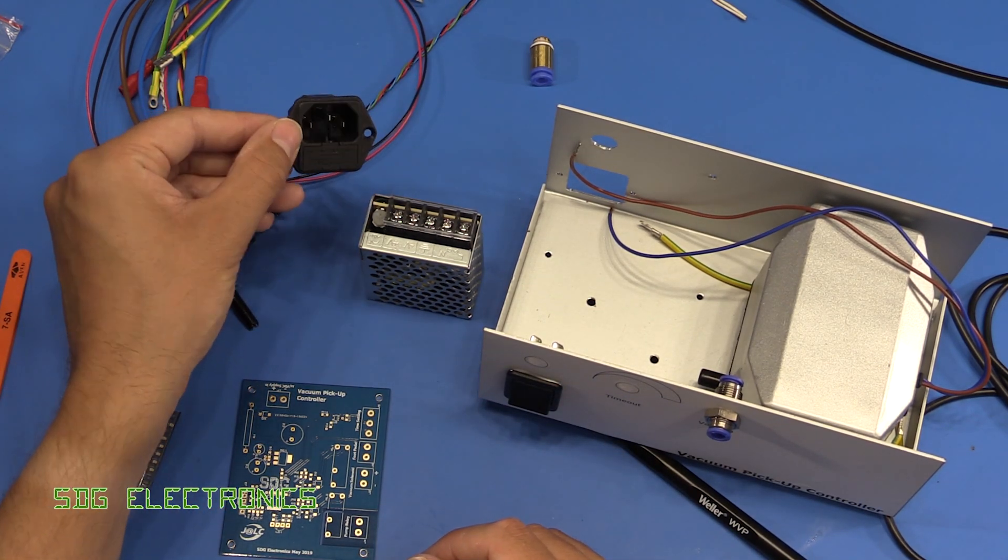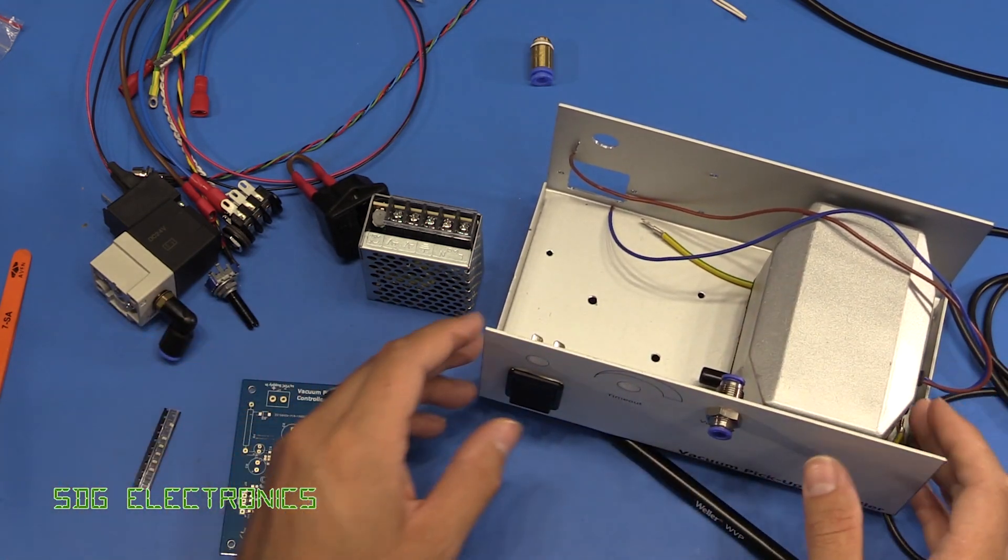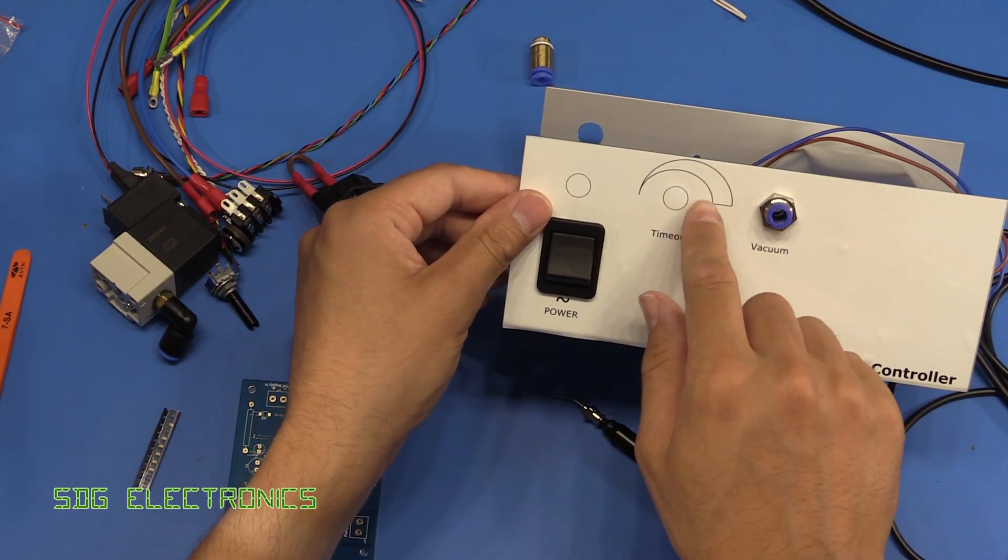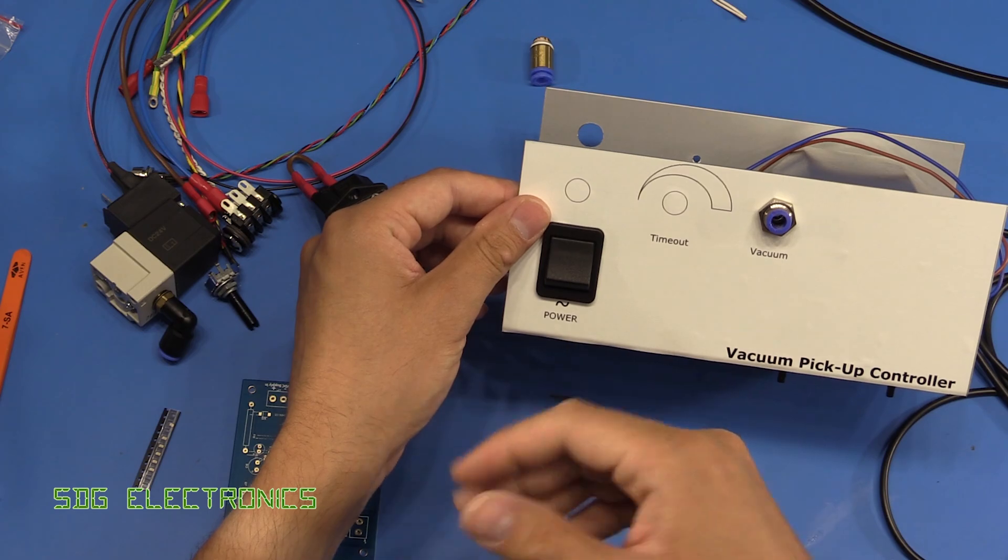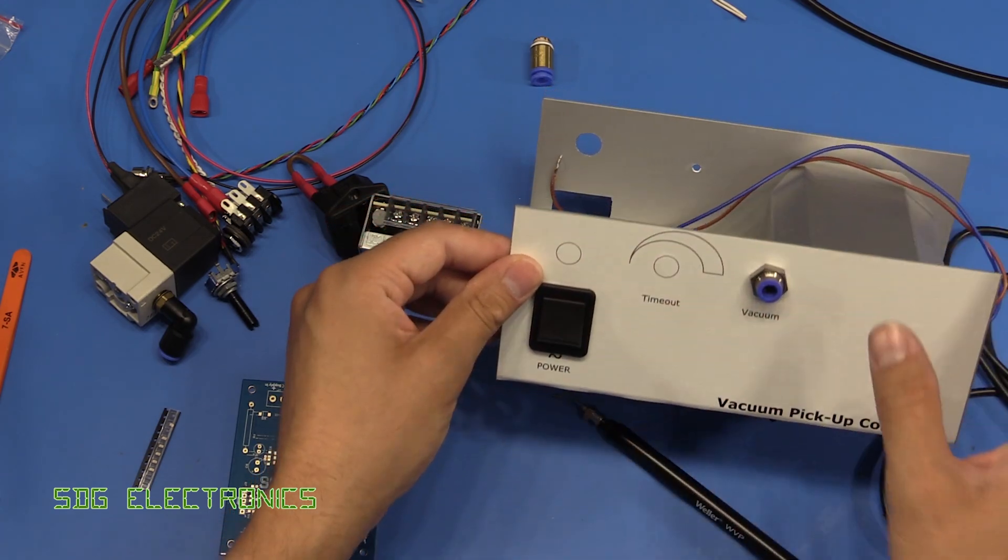We've got a few other bits and bobs like an IEC connector for power, a power switch on the front and we've got things like a dial to set how long it takes before the pump turns off and that kind of thing.